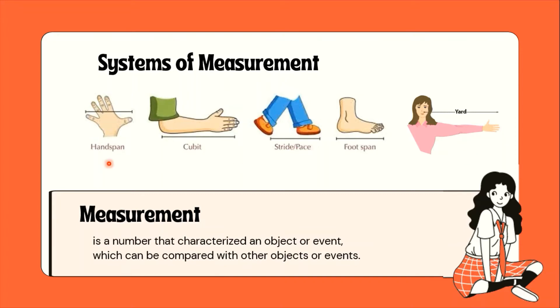Pwede natin gamitin ang mga susunod for non-standard system of measurement. Ito ang tinatawag natin na handspan or dangkal sa Tagalog. Yung kanyang measurement ay mula sa tip ng little finger hanggang sa tip ng thumb. Pag in-extend mo siya, yun ay ang ating handspan.